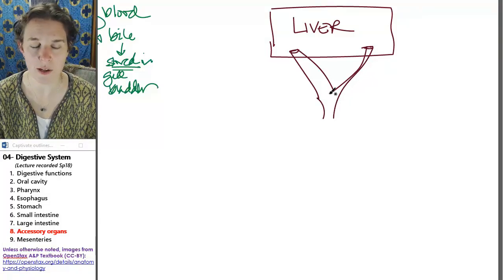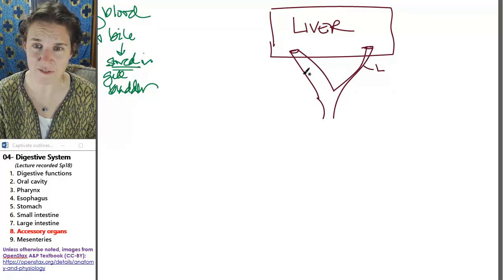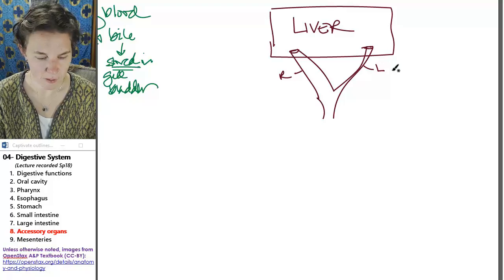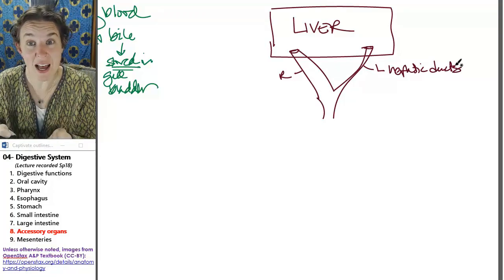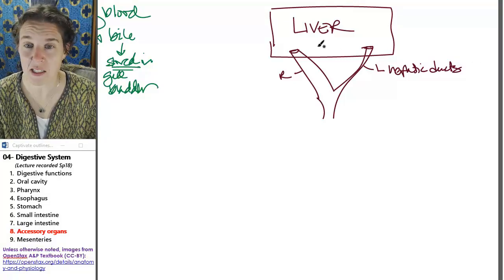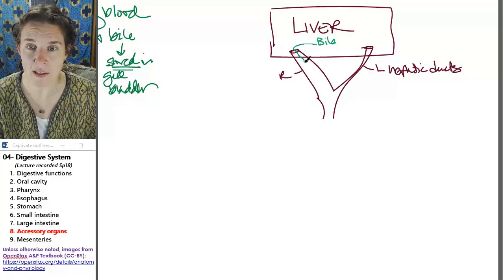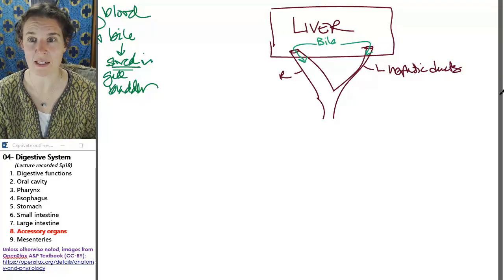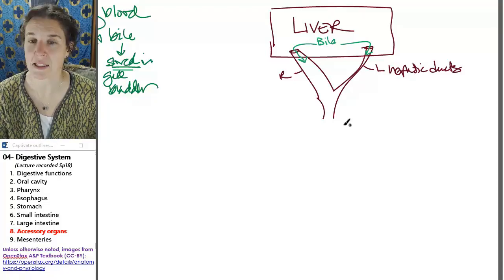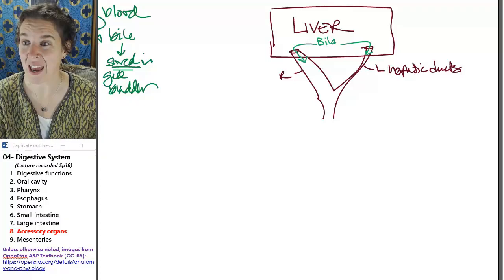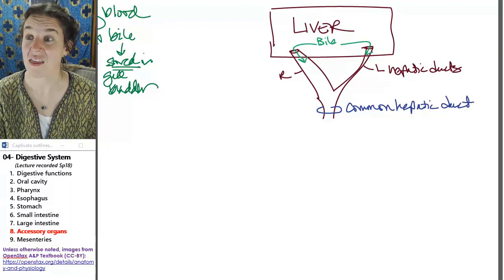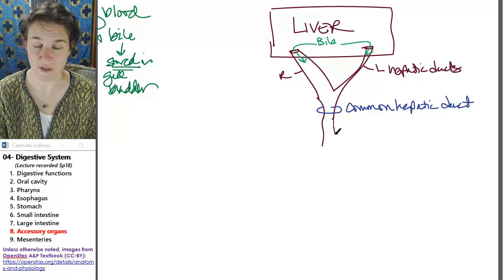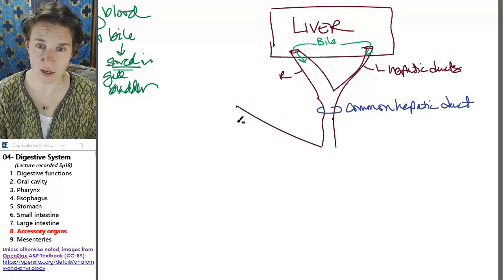You actually have a couple of ducts in the liver and, again, this is totally diagrammatic. You have the left and right hepatic ducts and these guys are receiving bile from the liver. So bile tends to be green and the bile is being dumped into these hepatic ducts. The left and right hepatic ducts form the common hepatic duct.